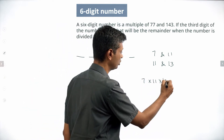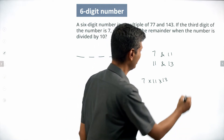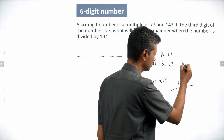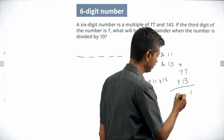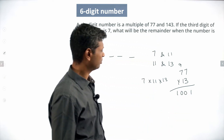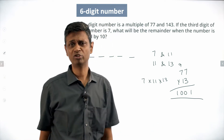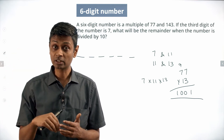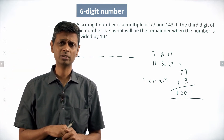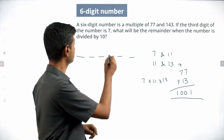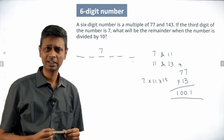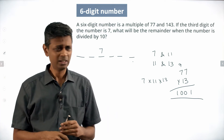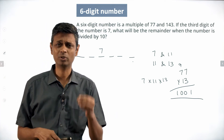7 times 11 is 77, and 77 times 13 is 1001. So our number is a multiple of 1001. Also note: 77 times 13 equals 1001 — and 1001 is a six-digit-friendly number. We need a six-digit number that is a multiple of 1001 and whose third digit is 7. We've established the key constraint; now let's find that number.